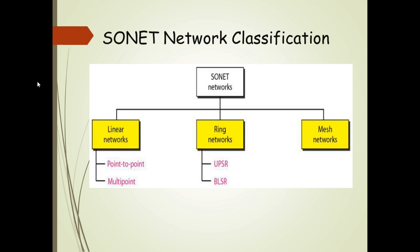This is the SONET network classification. Using this, we can create a SONET network that can be used as a high-speed backbone carrying loads from other networks. We can roughly divide SONET into three categories: linear, ring, and mesh networks. Linear networks consist of point-to-point and multipoint configurations, and ring networks consist of UPSR and BLSR.